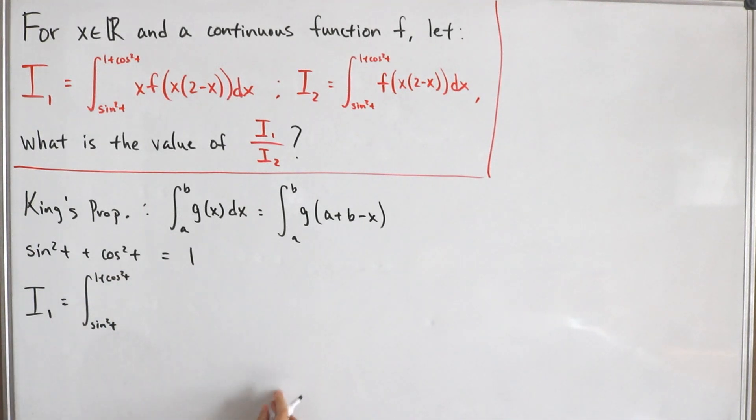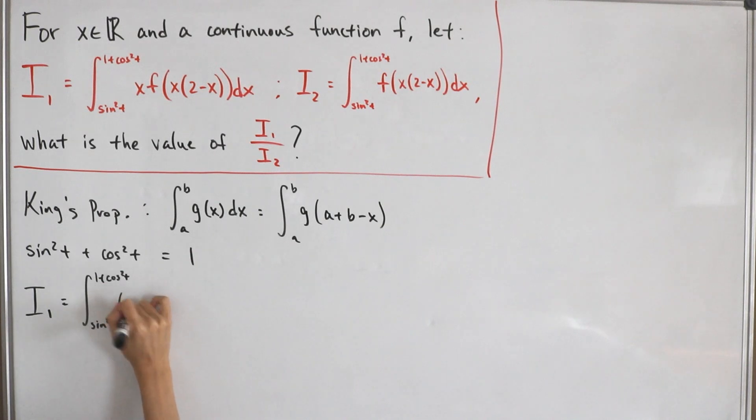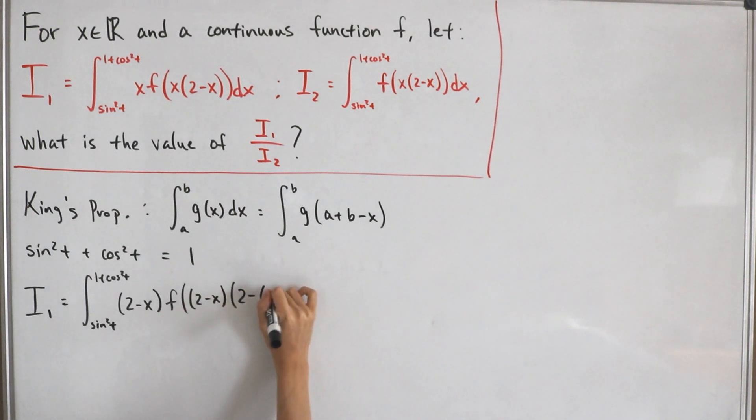So if we do the substitution, if I add our bounds sine squared t plus cosine squared t is one, add one again so it's two, and then subtract x with the substitution. Putting this back in for our new i sub one conversion, this will yield us two minus x, then multiply with f of two minus x, that's just the quantity itself, and then we have two subtract with the quantity two minus x, then dx.